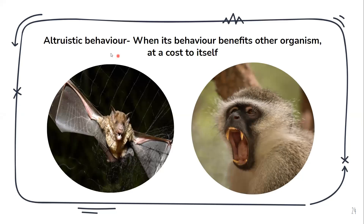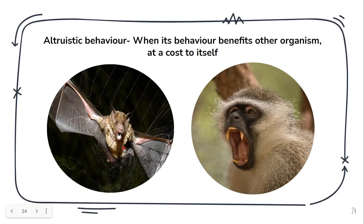Altruistic behavior is when the behavior of an organism benefits another organism at a cost to itself. For example, consider vampire bats — they feed other members of their population with blood in case those members have not been able to get food. They basically give their own food, which costs themselves but benefits others.